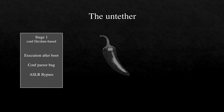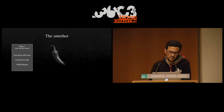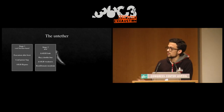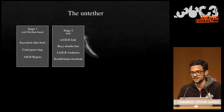The untethered jailbreak can be divided into four stages. Stage one is the config file or database stage — how we gain execution at boot, then the config parser bug that gives us a write-what-where primitive, and the DASL bypass which lets us get into ROP. Stage two is a kernel exploit written entirely in ROP, covering two main kernel bugs: the KSLR leak and a racy double free to get kernel read/write. After getting kernel read/write we can remove a few restrictions from Apple — mainly bypassing code signing.